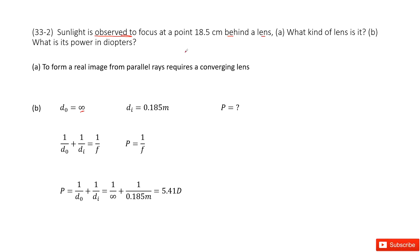And the image distance is given. So we write it there. You need to find the power, right? Now we can see the definition for power is 1 over f, so it looks like we need to find the focal length.